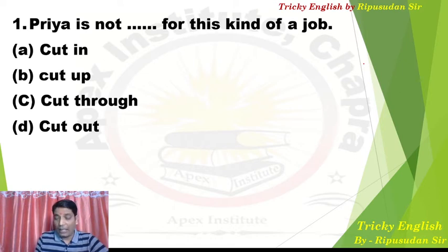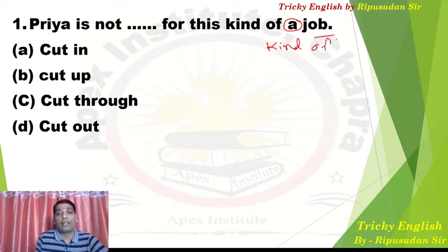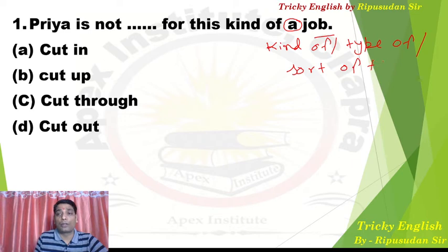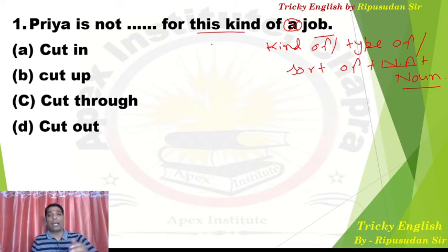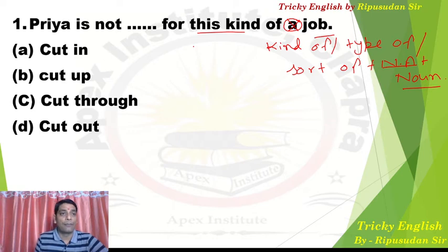The error here is the use of 'this kind of' — after 'kind of', 'type of', or 'sort of', we do not use an article. No article should be used before any noun. So from a grammar point of view, using an article here is completely wrong. However, if the sentence were interrogative, 'a' or 'an' could be used after 'kind of', 'type of', or 'sort of' in an interrogative sentence.